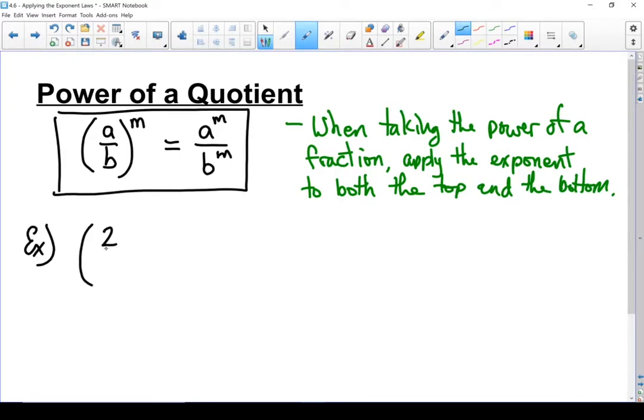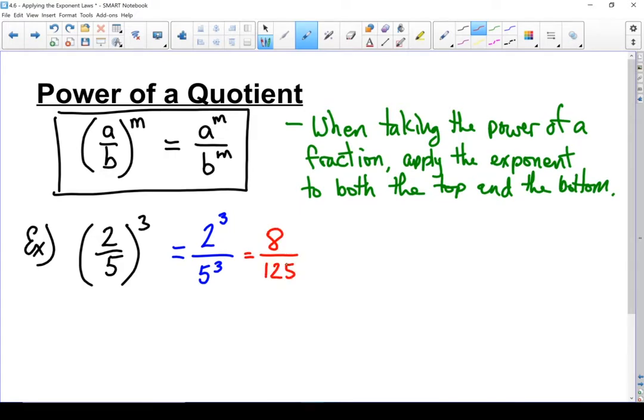Let's go through an example of that. 2 fifths to the power of 3. I'm going to take that exponent and apply it to the numerator, so I've got 2 cubed on top. Take that exponent and apply it to the denominator, so I've got 5 cubed on the bottom. Evaluate each piece separately. 2 cubed is 8 and 5 cubed is 125. There's my answer.